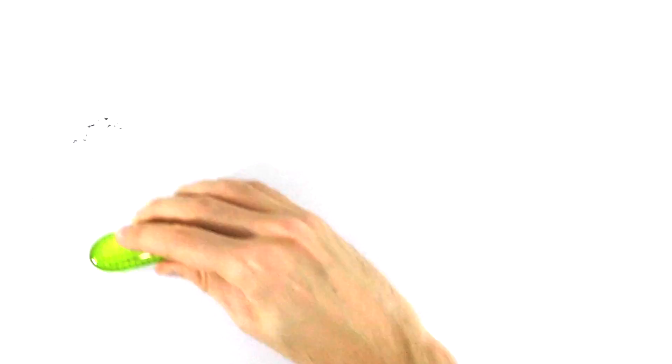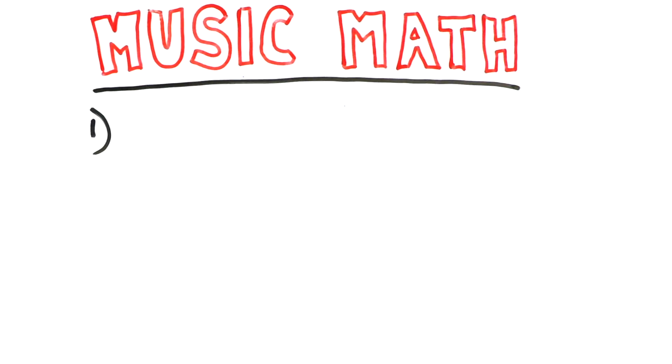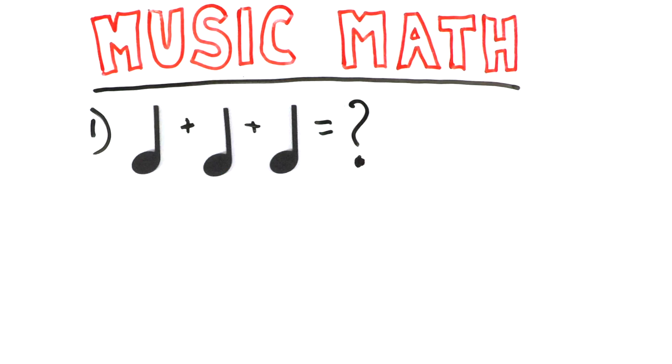Now let's do a little bit of music math to practice your knowledge. Here's your first question. What does a quarter note plus a quarter note plus another quarter note equal? Do you have the answer? To get to that answer, we have to remember what the quarter note is worth and remember that each quarter note is worth one beat. So that means it would be basically one plus one plus one, one beat plus one beat plus one beat, which would equal three beats. So if you also got an answer of three beats, you're on the right track.